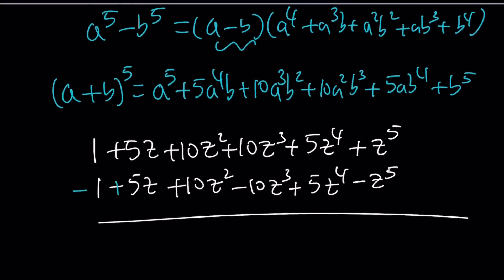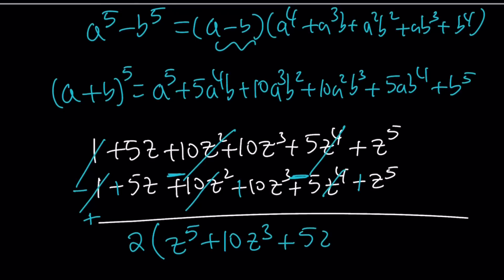So this is going to be a minus, plus, minus, plus, minus, and plus. And when we add these now, this is going to give us 0. Obviously, the z squared is going to cancel out, and that's going to leave us with the odd powers. So from here, we're going to get z^5 twice, so we can put a 2 out and write 2(z^5 + 10z^3 + 5z), and the whole thing is equal to 0.